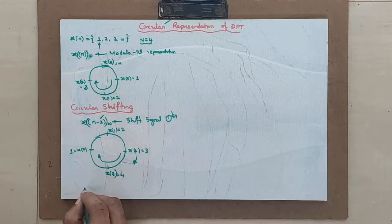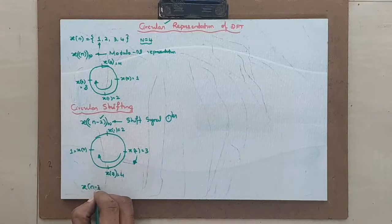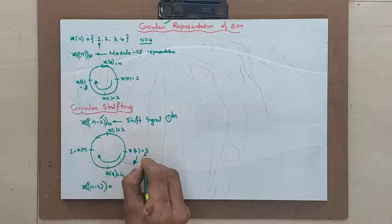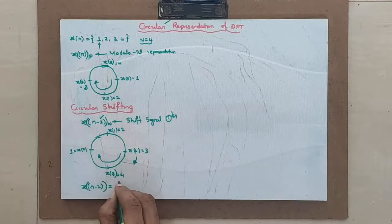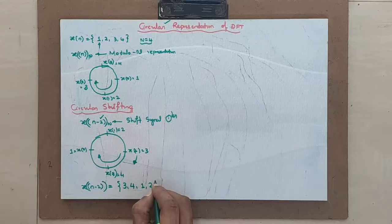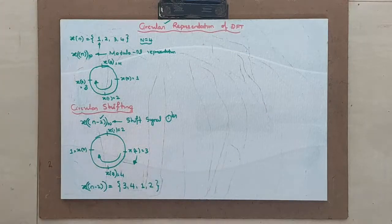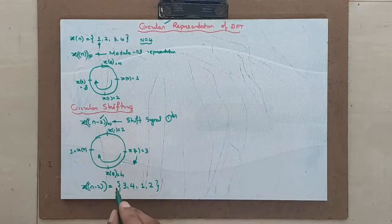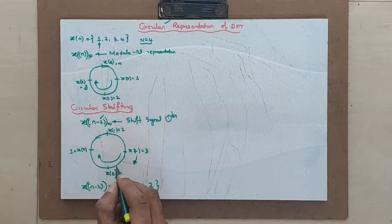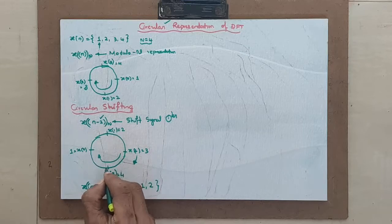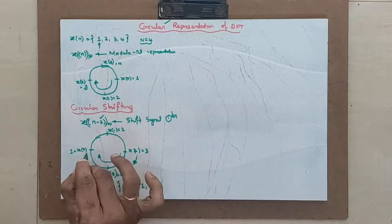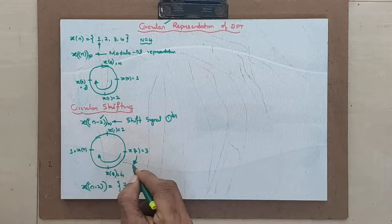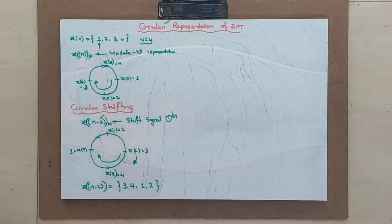What is the new signal? New signal or x of n minus 2 is nothing but 3, 4, 1, 2. I hope you understood how exactly I am shifting. Very simple. Whatever signal is given now, how many times shifting? This is the 0th position. 1 and 2. Start writing the signal at that point. 1, 2, 3, 4 and read it from the starting. This is how circular shifting takes place. I hope you understood this circular shifting.